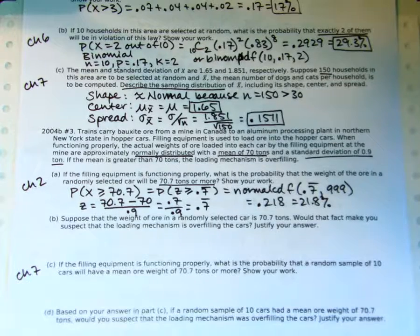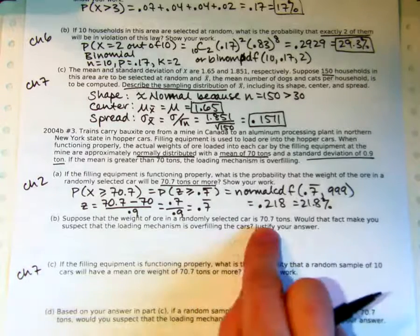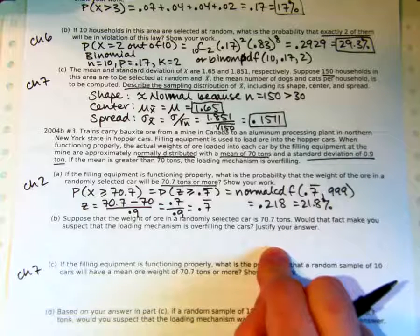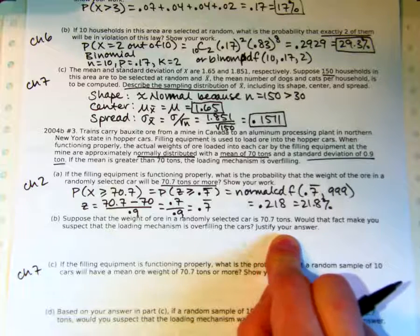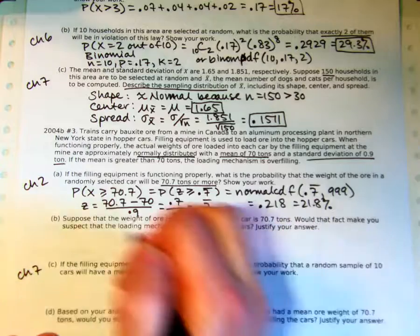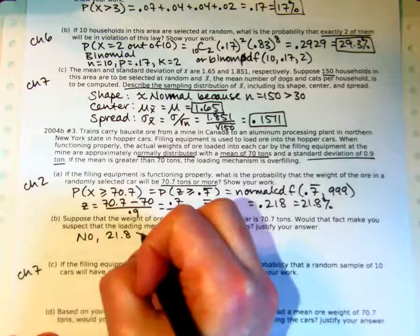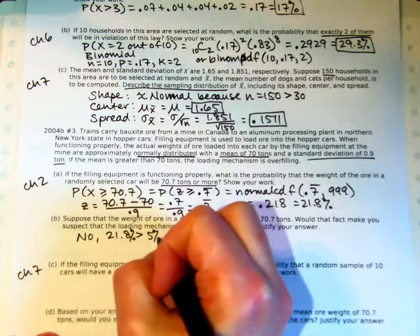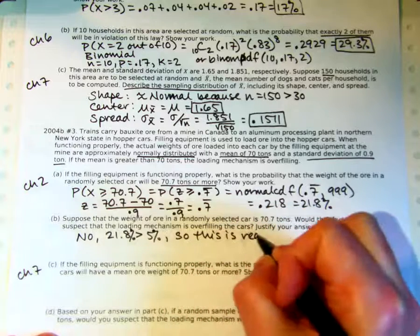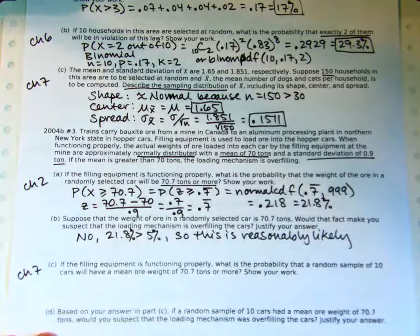So then part B, we've seen this a lot this year in different chapters. Suppose that a randomly selected car is 70.7. That's what we just found the probability of. Would that make us suspect that the loading mechanism is overfilling? Is this evidence that the true mean is greater than 70? No, it's not. Because 21.8% is pretty likely. So I'm going to say no, 21.8 is greater than 5%. So it's reasonably likely to happen by chance. So I would not be suspicious at all.